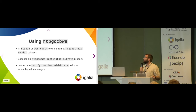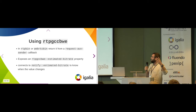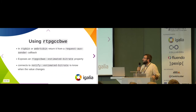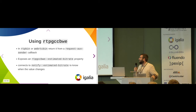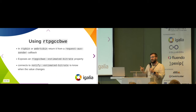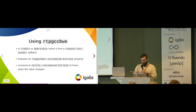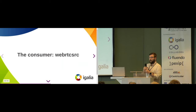It exposes one property: the estimated bitrate. So it's very simple to use — it does everything in the background, running the whole algorithm. You just need to listen to the estimated-bitrate notify signal emitted by the element, and respond by setting the encoders so that the bitrate they produce matches what has been estimated, because the estimation process requires that the bitrate being sent on the connection matches what we're estimating. That's part of the process.